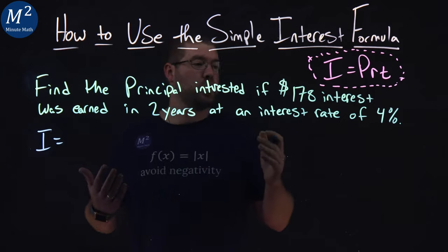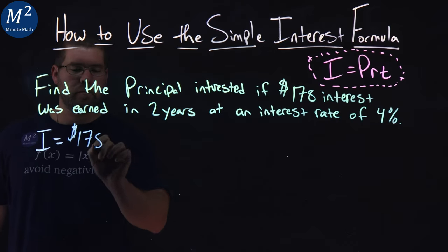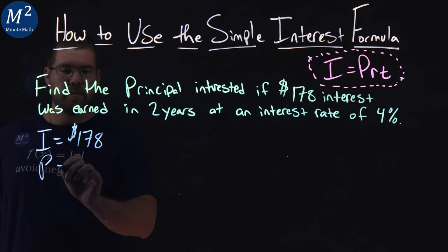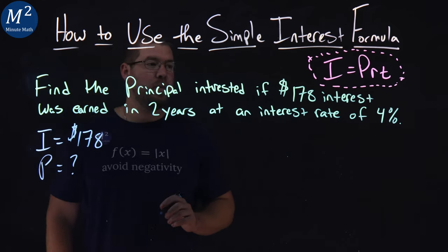The Simple Interest earned was $178. Our principal, well, we want to find our principal amount invested, and we don't know what that is.